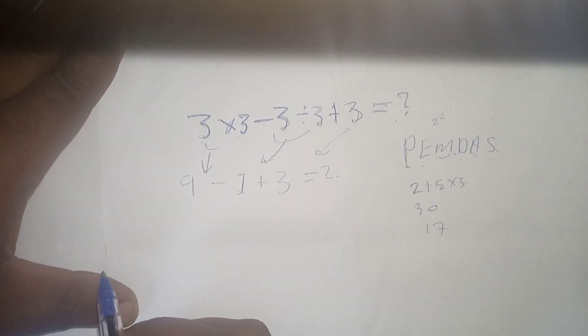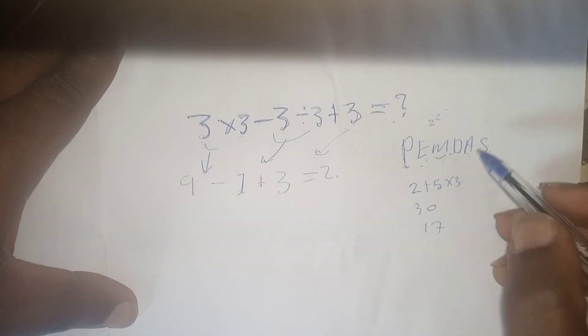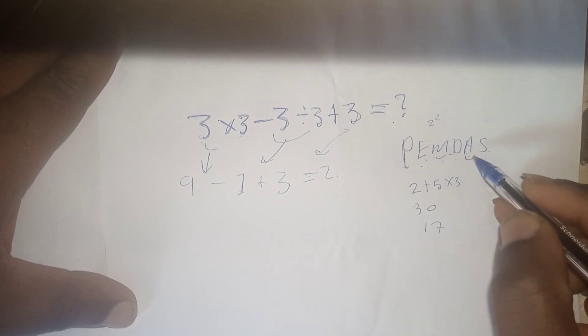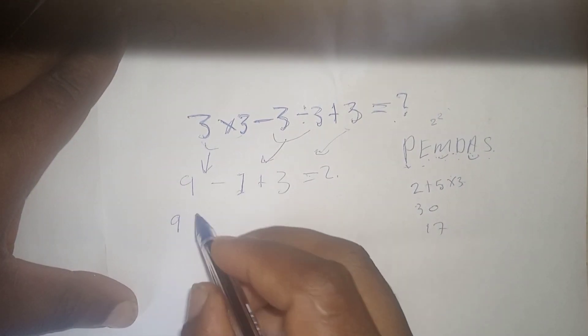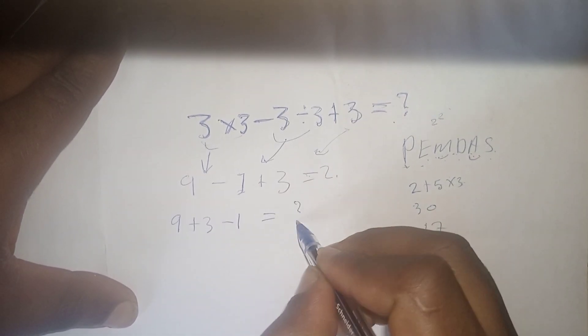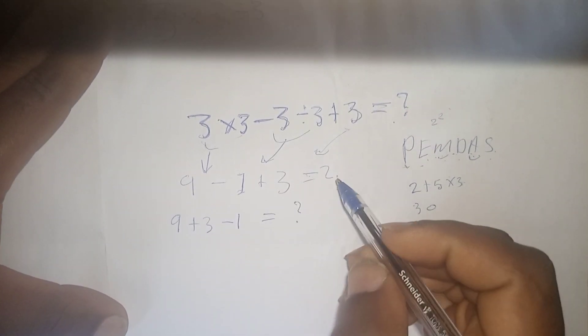So that's how we simplify it. The next thing I want to do is addition. So we have 9 plus 3 minus 1 equals. I hope you are following up.